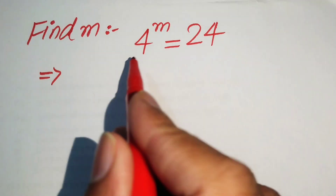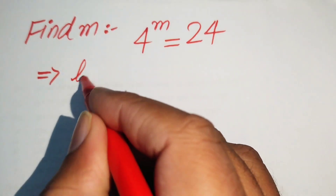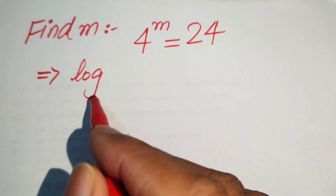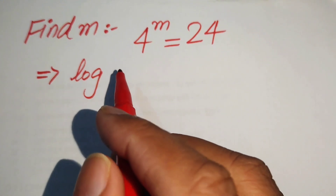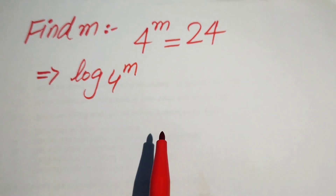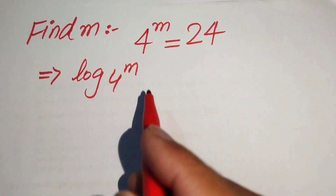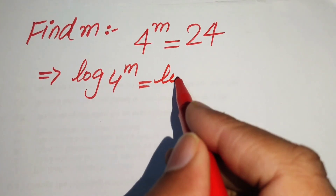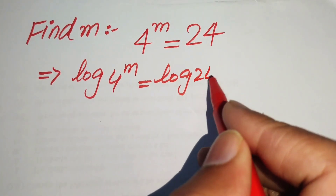When we take the common log on both sides, it will be written as: log of 4 to the power of m is equals to log of 24.